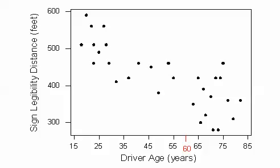Here again is the scatterplot of the driver's ages and maximum distances at which a sign was legible. The age for which an agency wishes to predict the legibility distance, 60, is marked in red. How can we do this prediction?